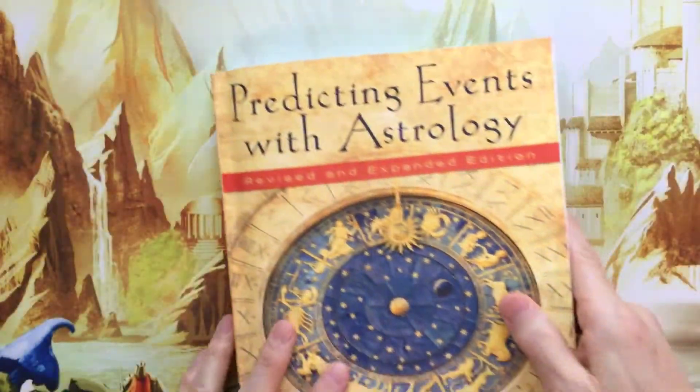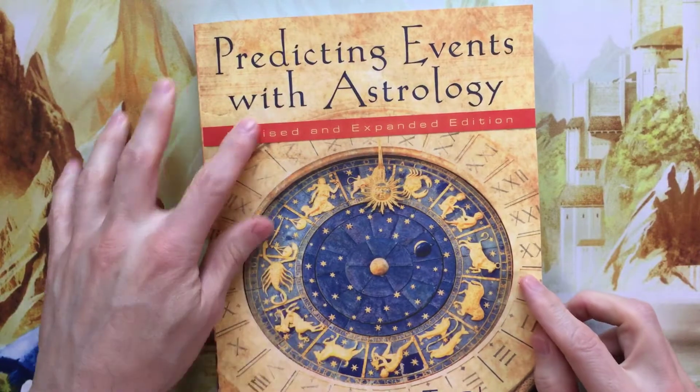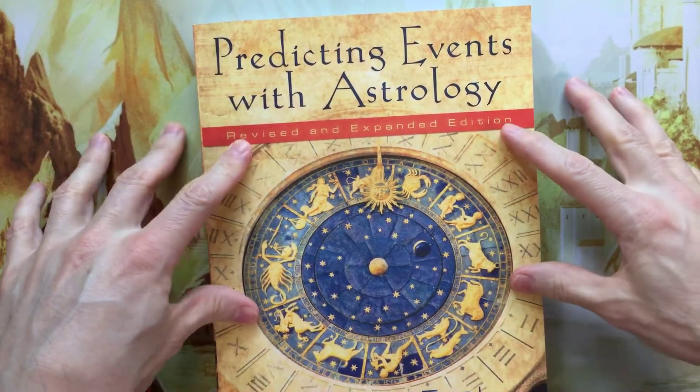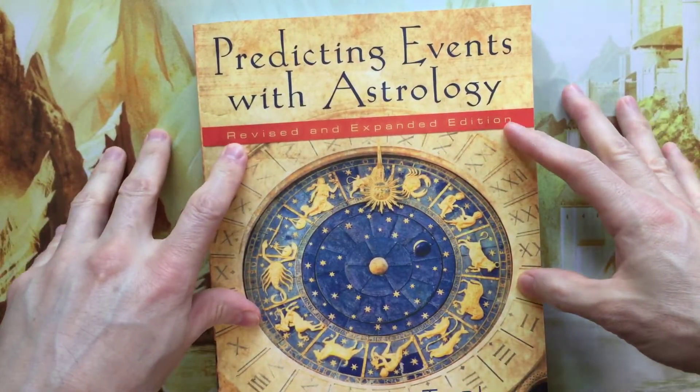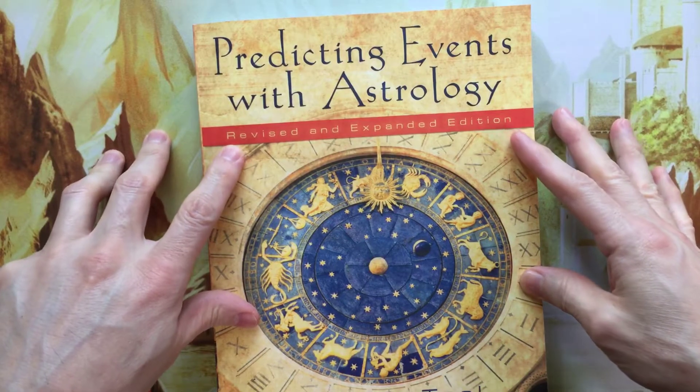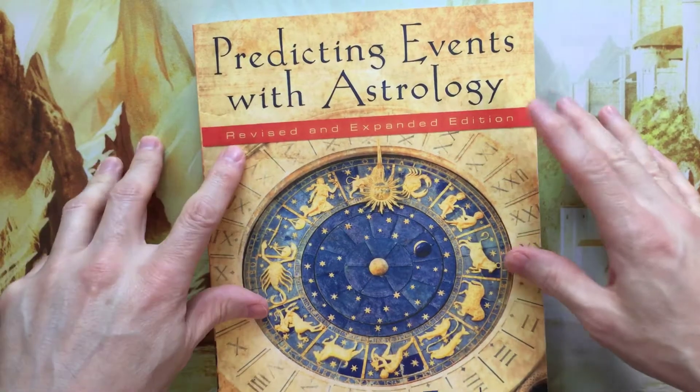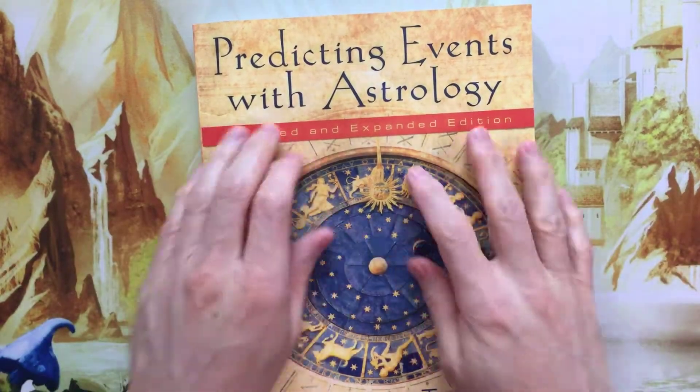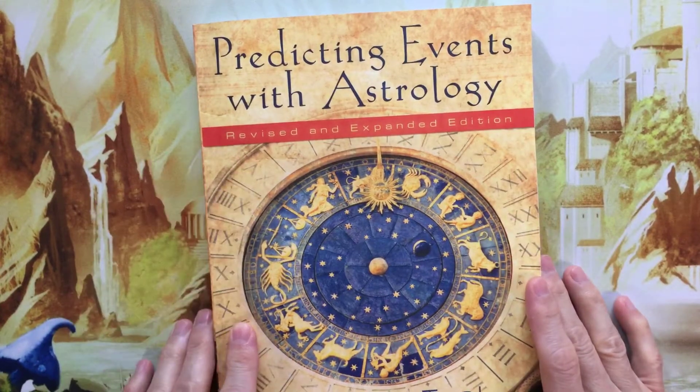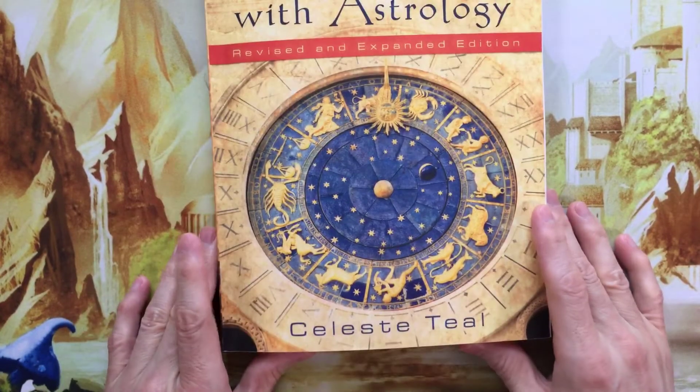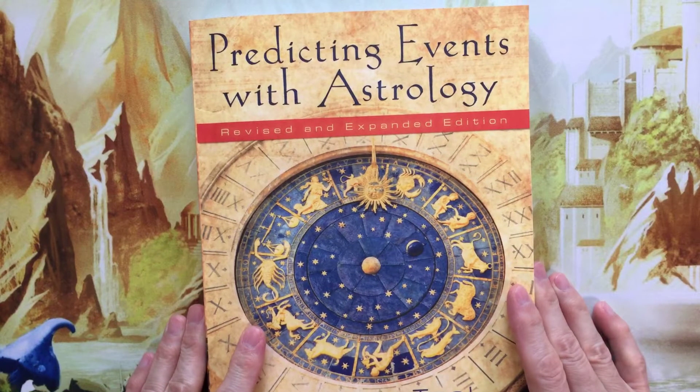Anyway, overall, I think this was worth the $18 I paid for it. If this was in a $30 or $40 range, I'd be like, yeah, I don't know. But $18, I like it. Overall, I like Predicting Events with Astrology. I think it was money well spent. And that is my review.